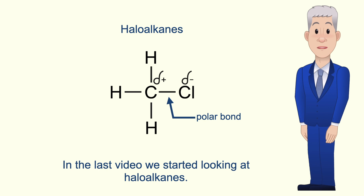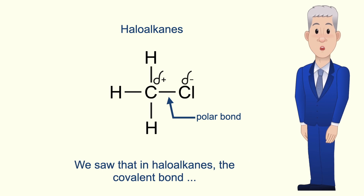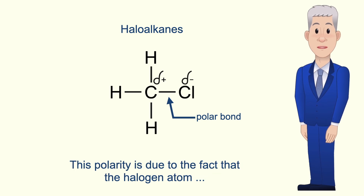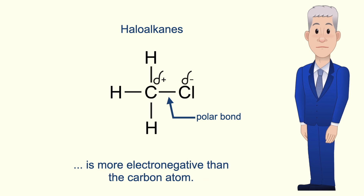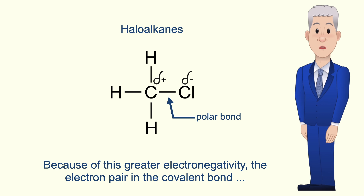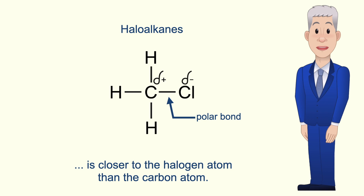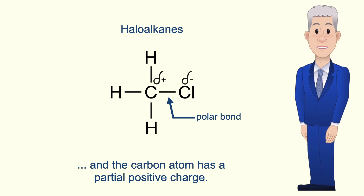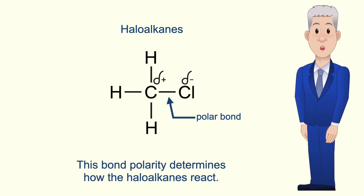In the last video we started looking at haloalkanes. We saw that in haloalkanes the covalent bond between the carbon atom and halogen atom is a polar bond. This polarity is due to the fact that the halogen atom is more electronegative than the carbon atom. Because of this greater electronegativity the electron pair in the covalent bond is closer to the halogen atom than the carbon atom. This means that the halogen atom has a partial negative charge and the carbon atom has a partial positive charge. Now this bond polarity determines how the haloalkanes react.